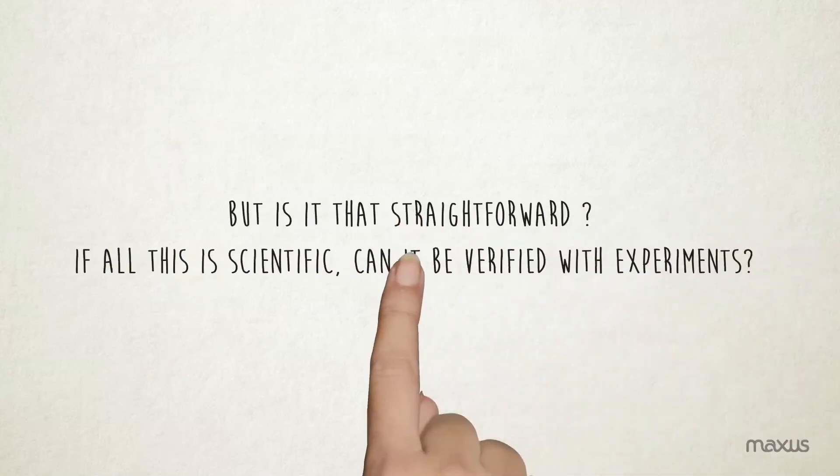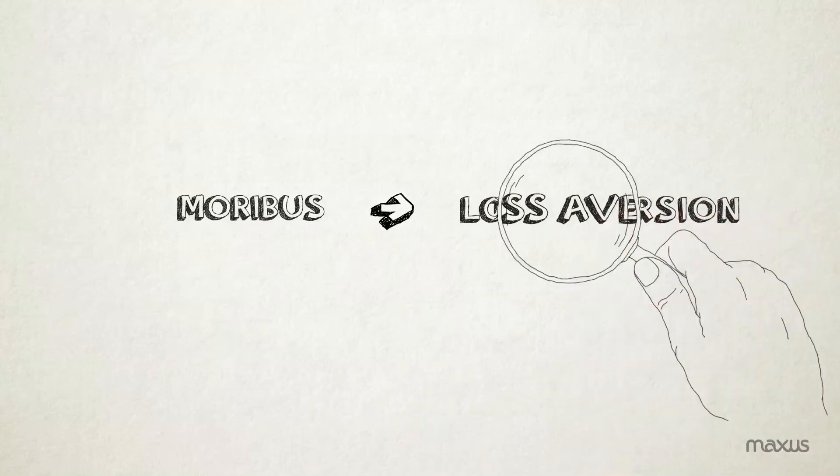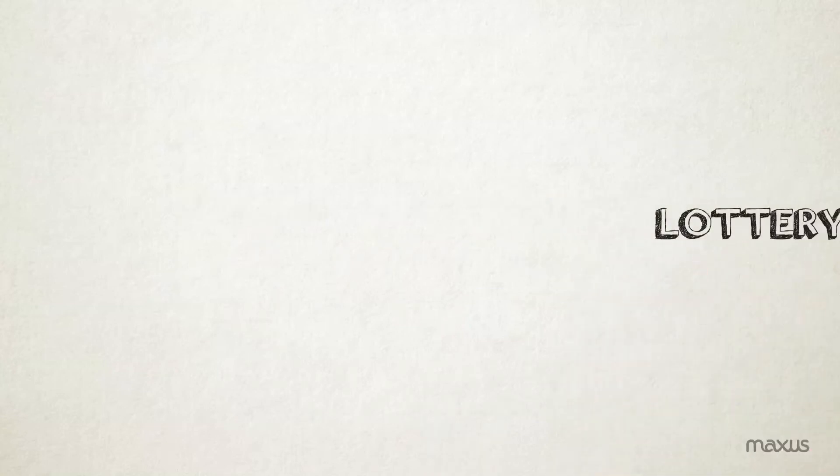If all this is scientific, can it be verified with experiments? Moribas conducted such an experiment to determine loss aversion in a particular population. The experiment design is called lottery choice task.